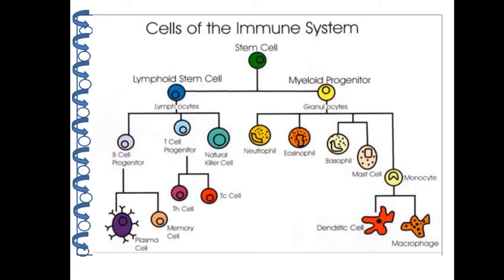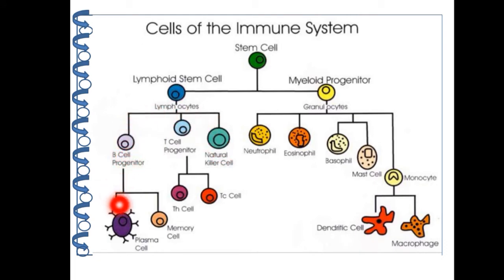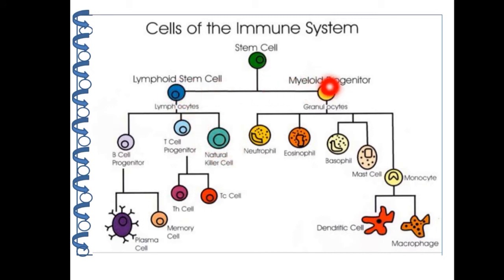Generally, both kinds of cells — lymphoid stem cells and myeloid progenitors — originate from the same kind of cell known as the stem cell. In the lymphoid stem cell lineage, lymphocytes are formed, which may form B cell progenitors, T cell progenitors, and natural killer cells. B cell progenitors form plasma cells and memory cells. T cell progenitors form T helper cells and T cytotoxic cells. In the myeloid progenitor lineage, the granulocytes — neutrophils, eosinophils, and basophils — are formed, which are types of white blood cells, along with mast cells.